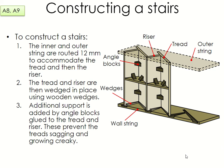Now we're looking at constructing the stairs. Number 8 is the method or process — write these in your own words or bullet points at the top of page 115. To construct the stairs, the inner and outer strings are routered — cut 12 millimetres — to accommodate the tread and the riser. You have a string either side of your stairs, and cuts are made into these for the treads and risers to fit into on both sides as a joint, so we can slot them in and fix them.